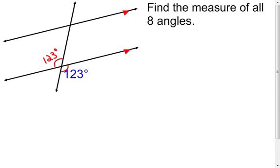Now I can go back to my four different theorems from parallel lines cut by a transversal. If lines are parallel, then alternate interior angles are going to be congruent. Looking at this 123 degree angle, the other alternate interior angle with it is therefore also 123 degrees. Then going back to vertical angles being congruent, those two have to match — so that's also 123 degrees. Now I have four of the eight angles taken care of.